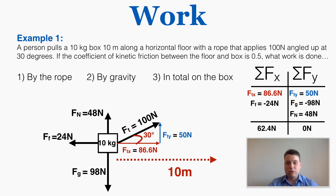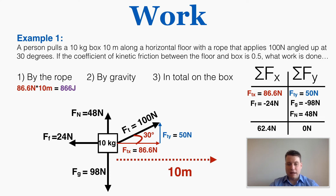The work done by the rope equals its force times cosine of the angle times the displacement. The x component of tension is 86.6 Newtons, pointing in the same direction as the displacement, so this is positive work: 86.6 times 10 equals 866 joules. Gravity points at 90 degrees to the displacement, so cosine of 90 is 0, meaning the total work done by gravity is 0.